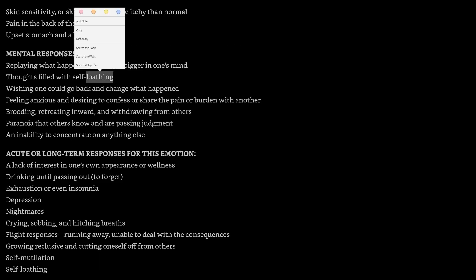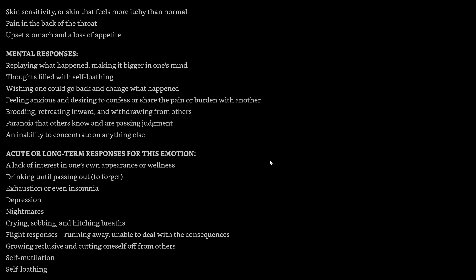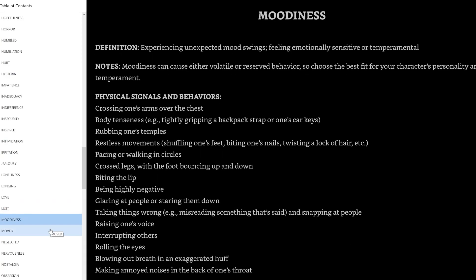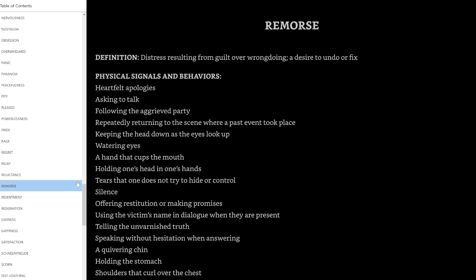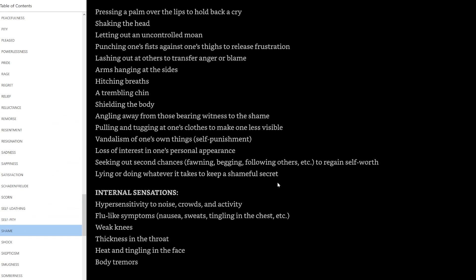Mental responses include being filled with thought — things we need to pay attention to beforehand. Other emotions we can use from the table: love, lust, moodiness, remorse, shame. Cheeks burned — these are all different ways we can add flavoring to our story. Let's do shame.